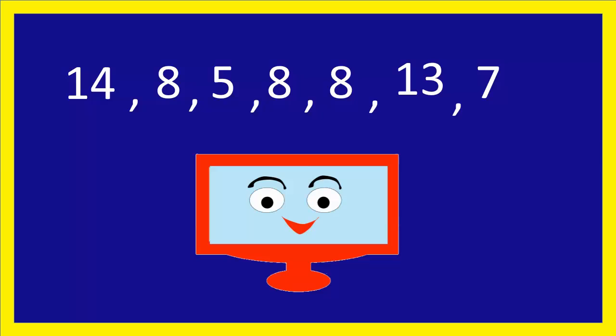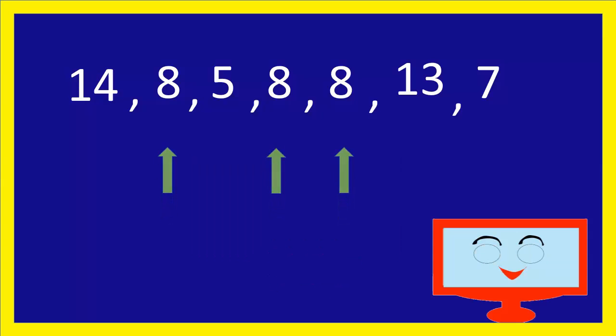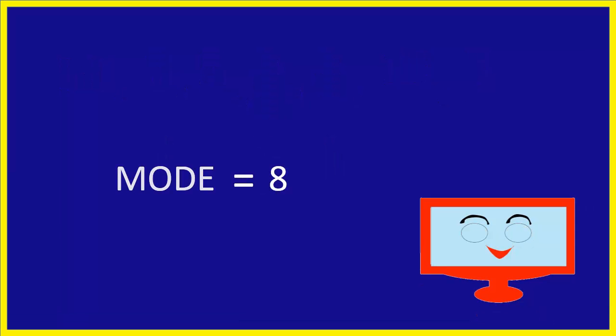Let us take a random sample of the number of televisions sold in a week. The mode of the data set is the value that is most frequently observed. This means that the mode of the data set is 8.